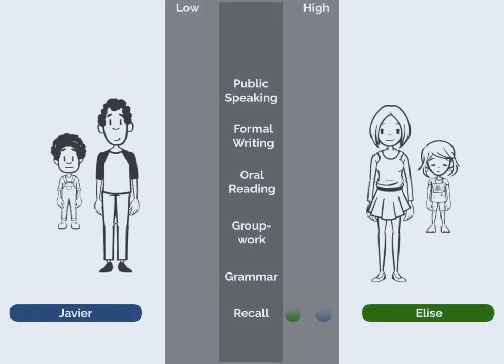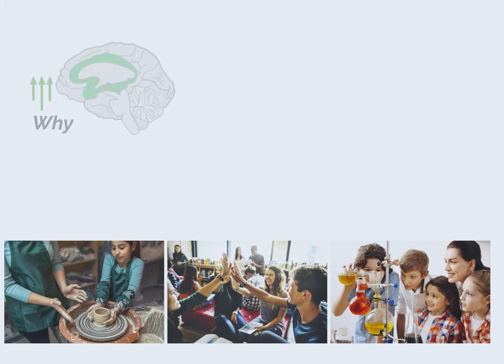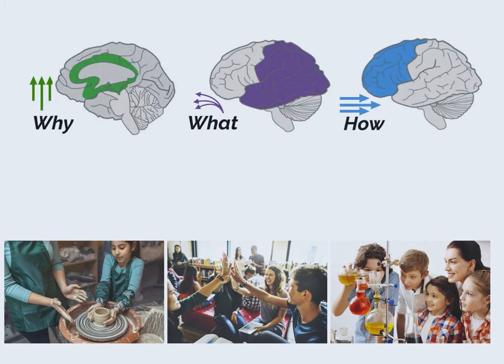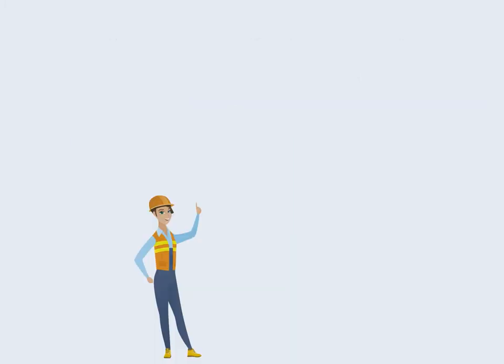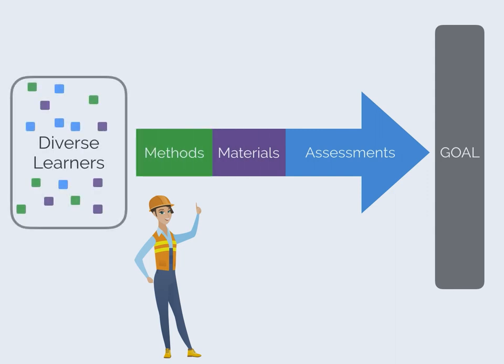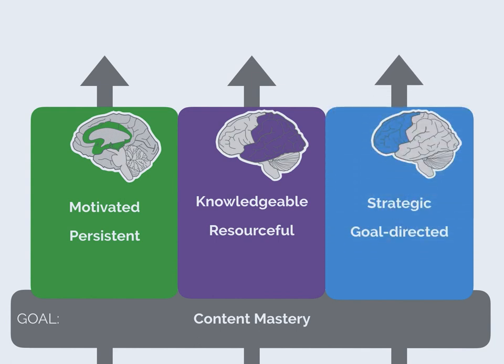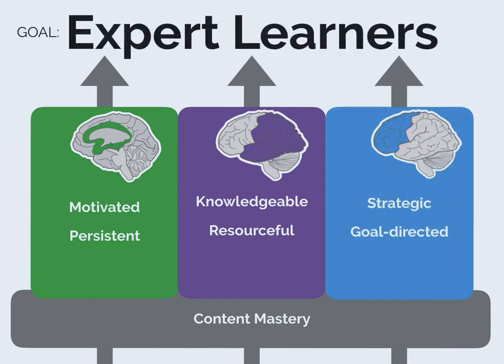Universal Design for Learning anticipates learner variability and builds in flexibility from the start. By embracing and celebrating diversity, UDL creates environments that give learners control over the why, what, and how of learning. In order to maintain high expectations for all, UDL educators are guided by the learning goals when choosing flexible assessments, materials, and methods. In UDL classrooms, all learners are empowered to move beyond simple mastery of concepts to becoming motivated and persistent, knowledgeable and resourceful, strategic and goal-directed Expert Learners.